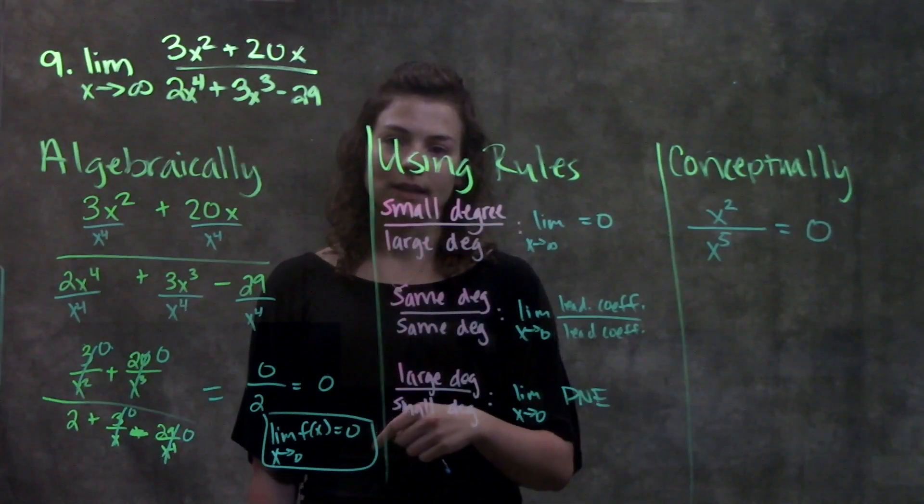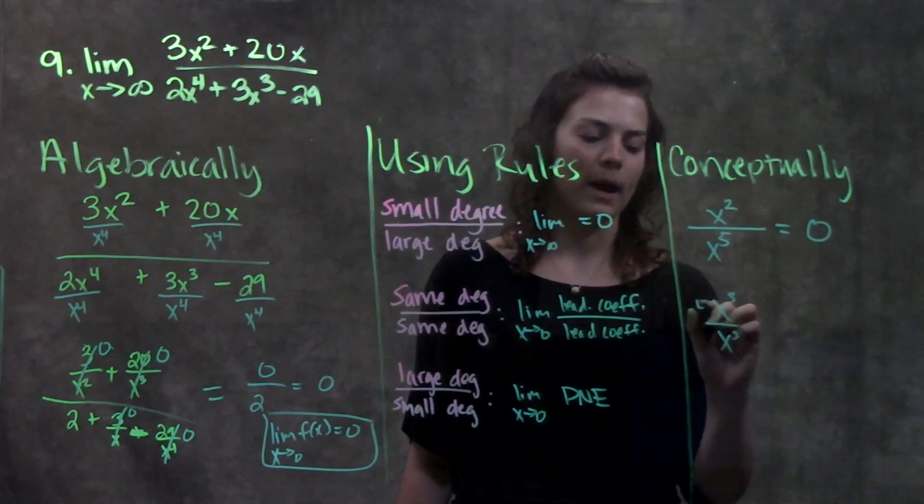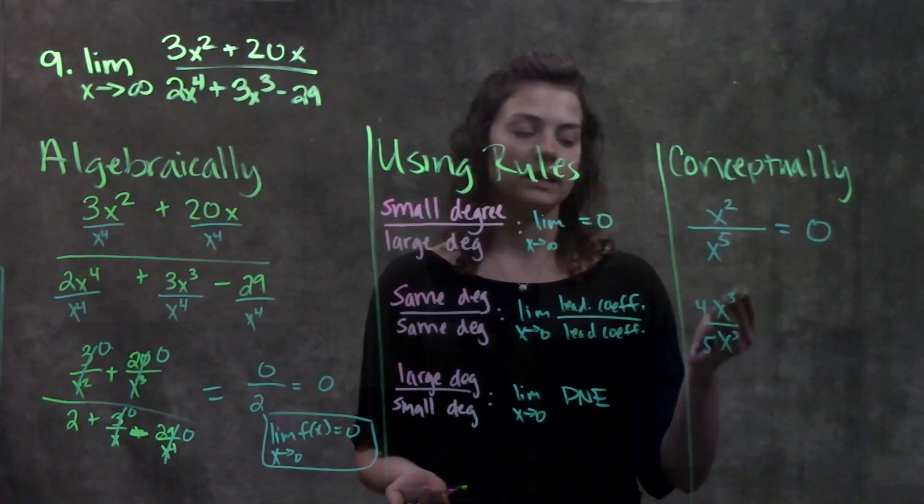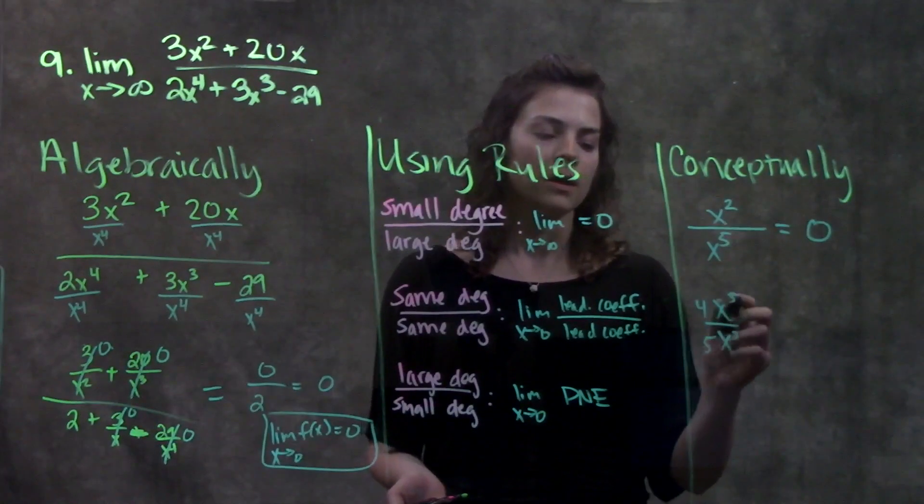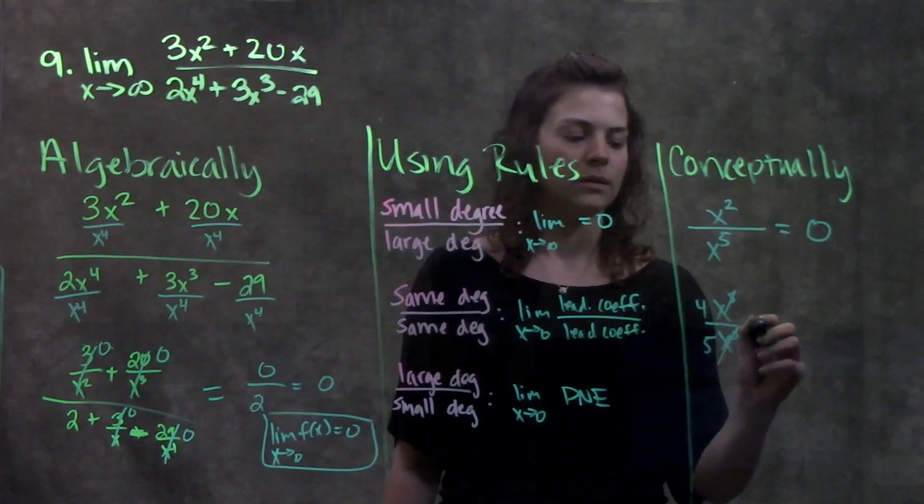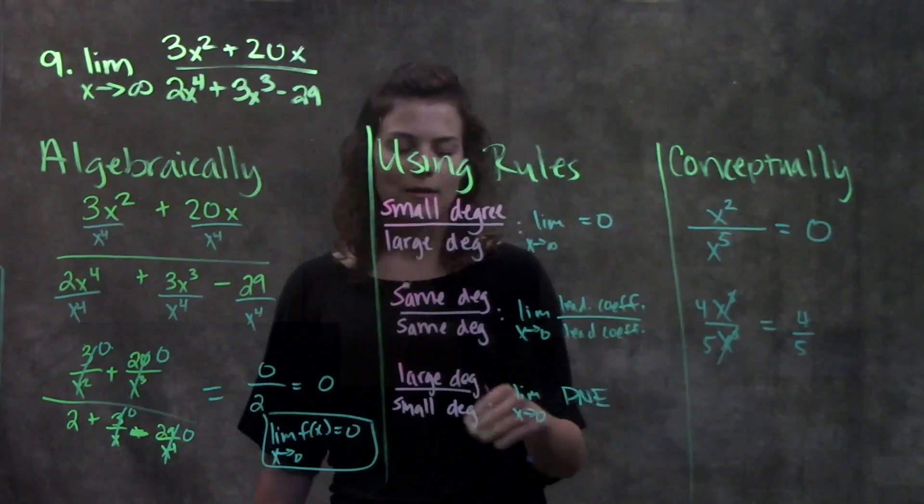If I had the same degree going into the same degree, well, which one has more power there? Which one carries more weight? They're both the same. Since they're both infinity to the cubed, or to the third, they basically just cancel out, and I'm left with whatever those coefficients are. So in this example, it's 4 over 5.